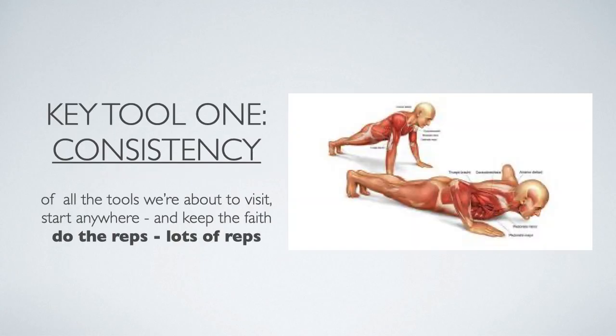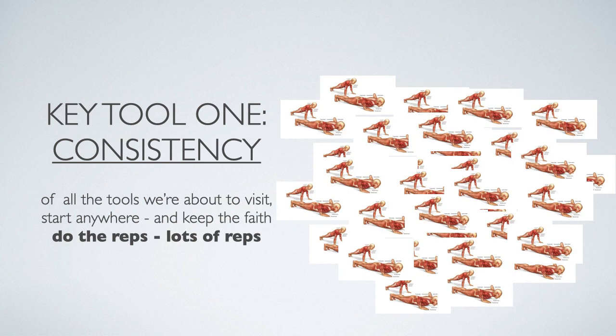Let's talk about practice parameters. Key tool one is consistency. You can pick anything you want to do in terms of a strength practice — for the first 4 to 12 weeks, they're going to have an incredible effect on the nervous system. The body is just getting used to this. The important thing is to do the reps. It doesn't matter if you pick up a 100 push-up challenge or start lifting weights — just do it frequently, as much as is reasonable within the program.